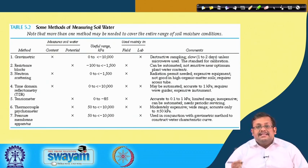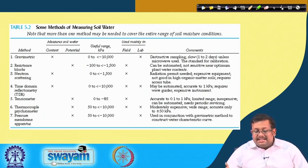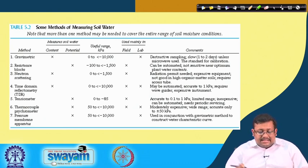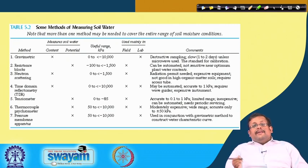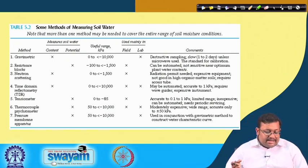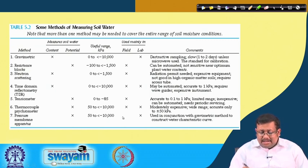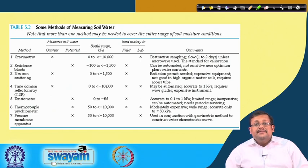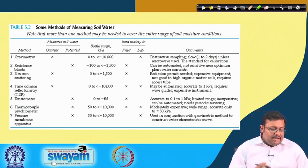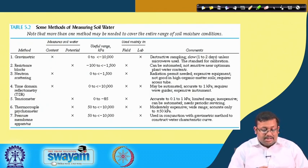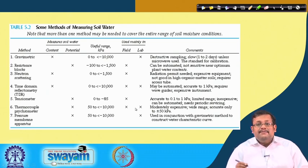This slide shows the pros and cons of different methods. The gravimetric method is a destructive method. The resistance or gypsum block can be automated but is not sensitive to optimum plant water contents. The tensiometer is accurate only from 0.1 to 1 kilopascal, limiting its range. The pressure membrane apparatus can be used from 50 to minus 10,000 kilopascals and is used in conjunction with the gypsum method to construct a water characteristic curve. The slide also shows which methods are used in the field versus the lab.